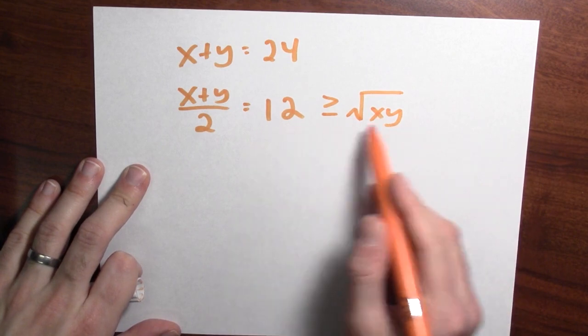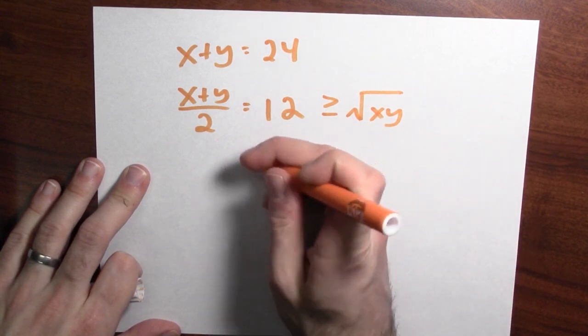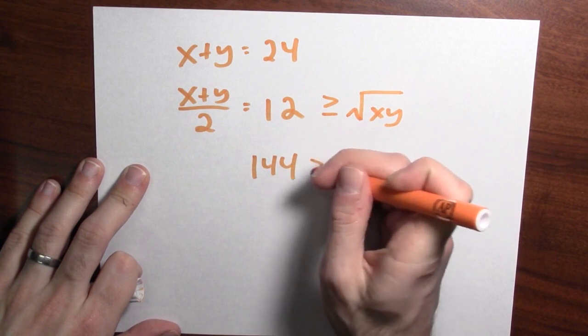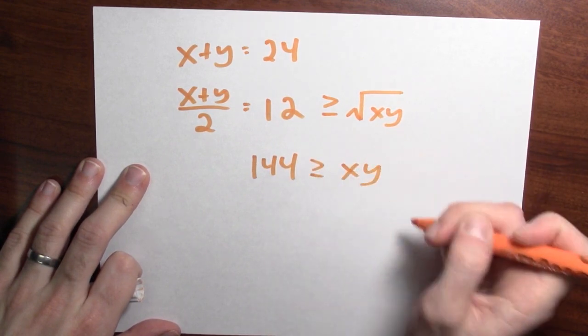Now, how does this help us? Well, what if I square both sides? Then I know that 144 is bigger than or equal to x times y.